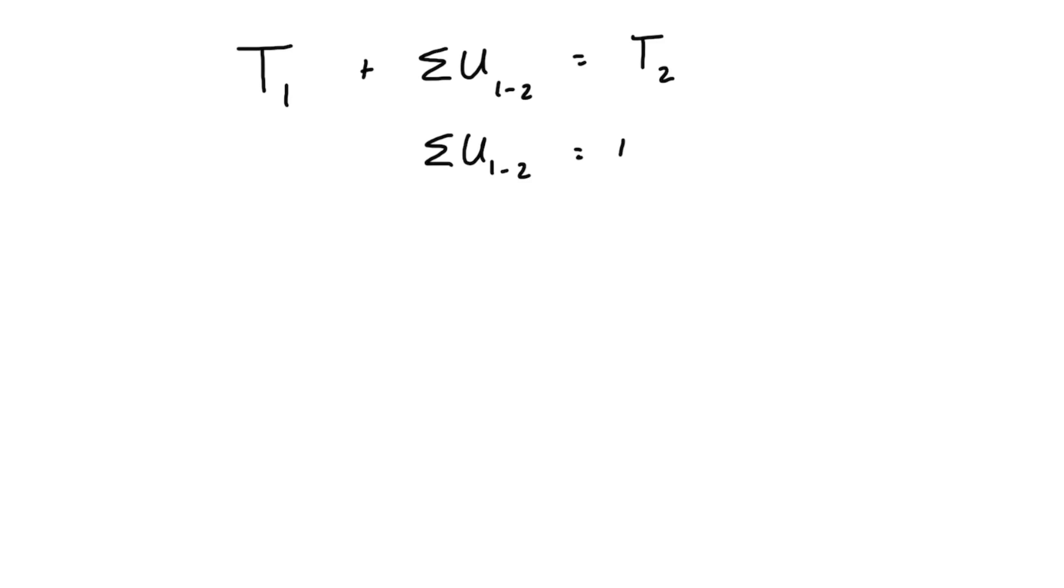of work done equal to T2 minus T1, which is the difference in kinetic energies. If you extend that out, we're going to see that this is 1/2 mv2² minus 1/2 mv1². Those are lowercase v's for velocity. If we have a problem that has an initial or final velocity of zero, the whole term which it's in is going to drop out and